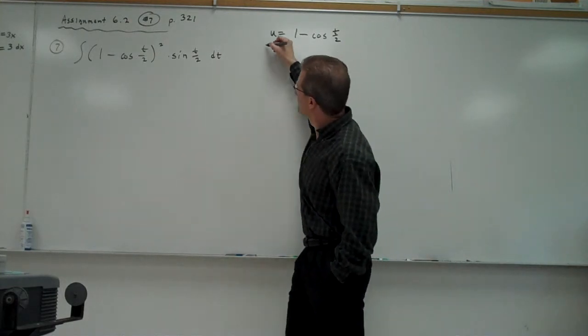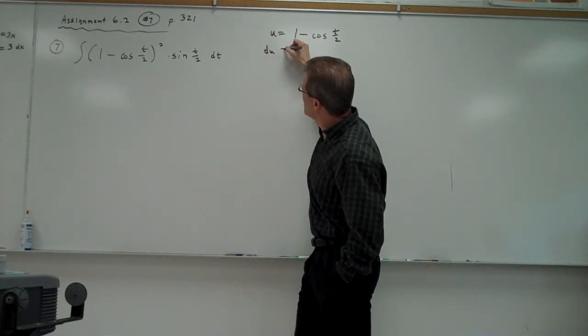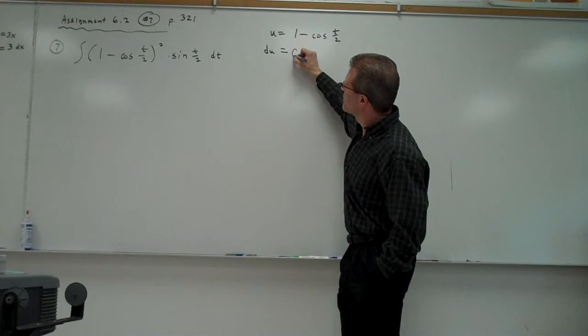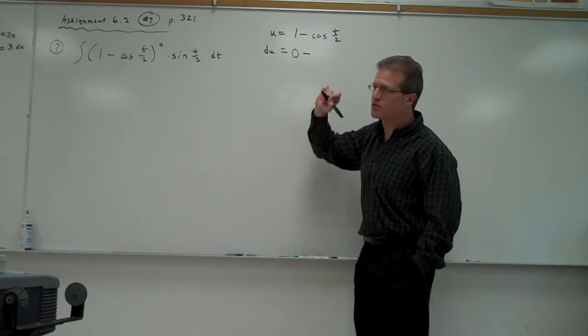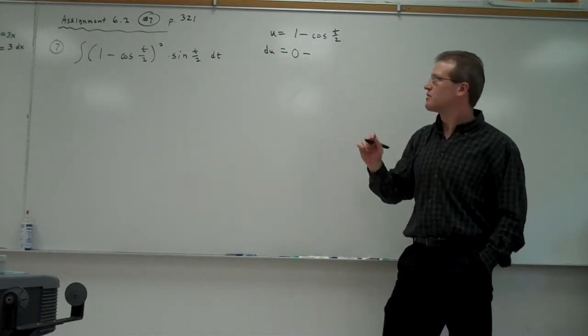And we're going to find du by doing the derivative of u. Derivative of 1 would be 0 minus, what's the derivative of cosine? Sine.